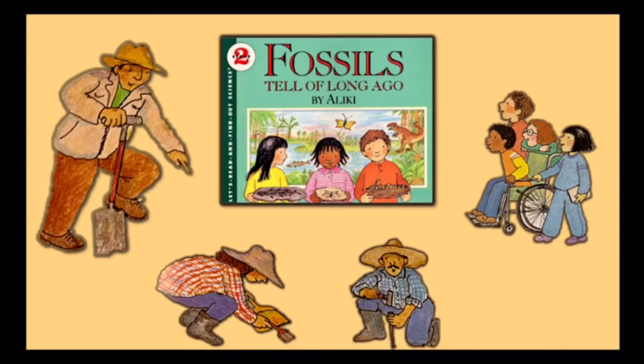Many lands that are cold today were once warm. We find fossils of tropical plants in very cold places. Fossils tell us about strange creatures that lived on earth long ago. No such creatures are alive today — they have all died out. We say they are extinct.